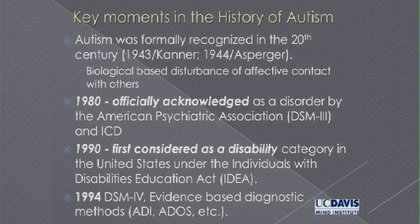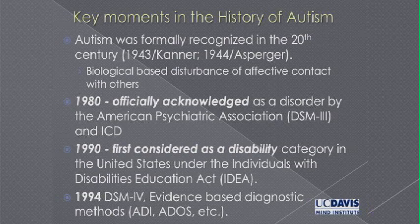In education, autism wasn't really part of the classification system that allowed schools to provide extra service to a child until 1990. So now we're talking about a 20-year period of time. We've only had a good diagnostic system since 1994. There's a controversy about what has led to the increasing prevalence of autism in society. Clearly one factor is that we didn't really have an accurate diagnostic system until 1994, and then it took at least a generation to train people in its use.